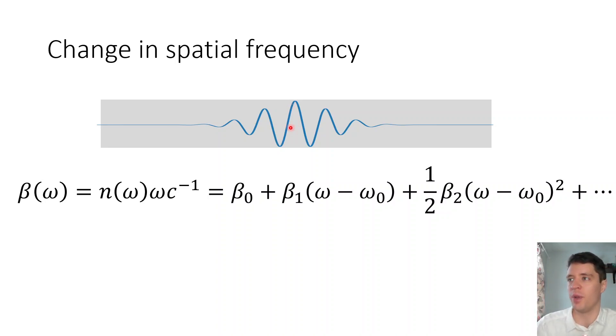If we can understand how the spatial frequency of both the carrier but also its adjacent frequencies are different, we can model how the pulse propagates through the medium in terms of the phase velocity and the group velocity.